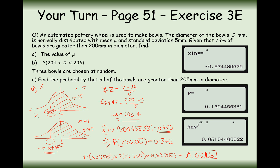That's how we answer questions from this section. Have a go at plenty of questions from exercise 3e. Remember, you're using the coding formula Z equals X minus mu over sigma to link corresponding values of X and Z. Thanks very much for watching.